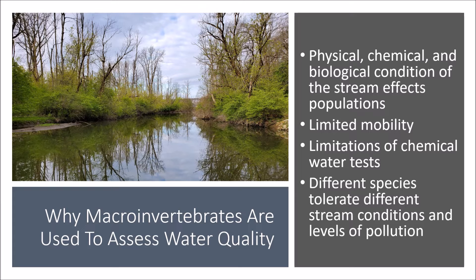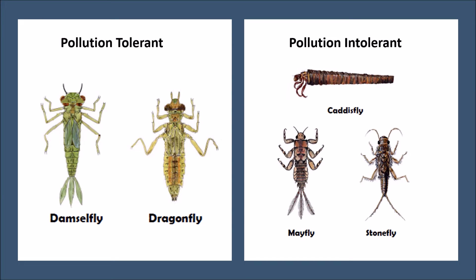A key reason they're used as biological indicators of stream quality is that different species of macroinvertebrates tolerate different stream conditions and levels of pollution. Species that you would expect to see in great abundance in higher water quality areas would be the caddisfly, mayfly, and stonefly — these are pollution-intolerant species. Pollution-tolerant species that you'd expect to see in high abundance in lower water quality areas would be species like the damselfly and dragonfly. It should be noted that these species can also be present in higher water quality areas.